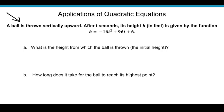A ball is thrown vertically upward. After t seconds, its height in feet is given by the following function. Notice it's a function where h represents the height, and it equals negative 16t squared plus 96t plus 6. And so t is our input, which is time, and our output is height in feet.